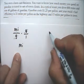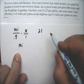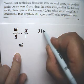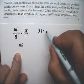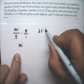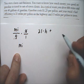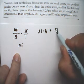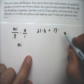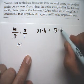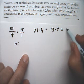So, they say 21 miles per gallon times the number of miles on the highway, I'll call that H, plus 13 times the number of miles in town, I'll call that T, that adds up to 600.